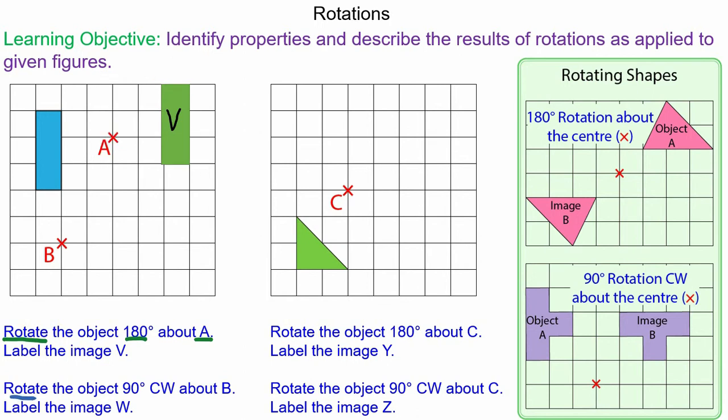Now we're going to rotate the object 90 degrees clockwise about B. So the first thing we do is mark on a 90 degree clockwise rotation, we'll label our vertices, and we're going to rotate the vertices and the center by 90 degrees.